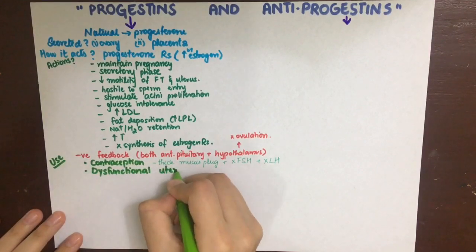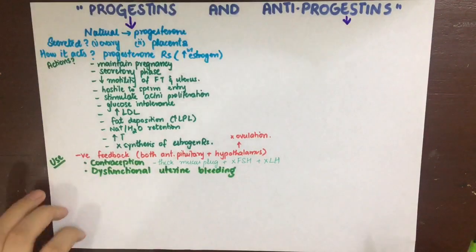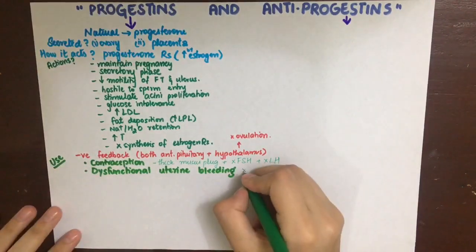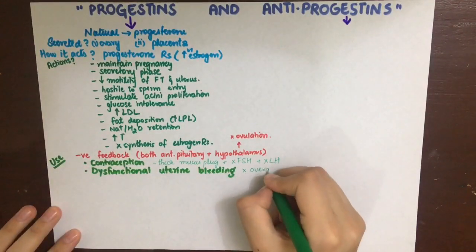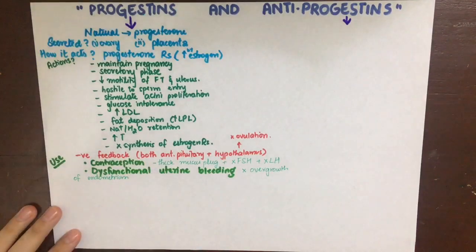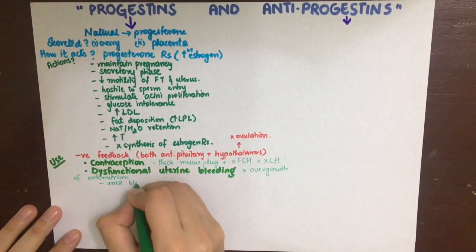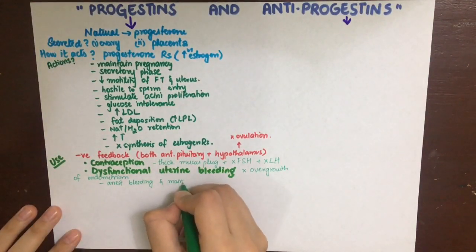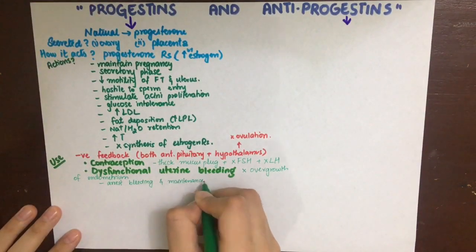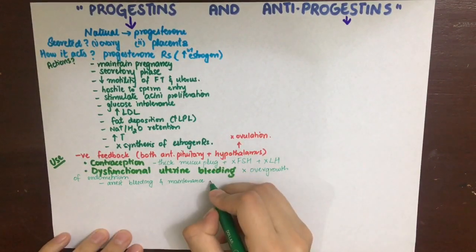Dysfunctional uterine bleeding occurs due to irregular breakdown of an overgrown endometrium, so progesterone can be used to prevent the overgrowth of the endometrium. It is given as an initial dose to arrest the bleeding, then a maintenance dose is given for 20 days. Withdrawal bleed will occur when it is stopped for two to five days, and then the cyclic therapy is continued for three to six months.